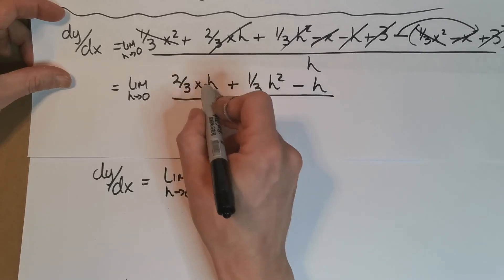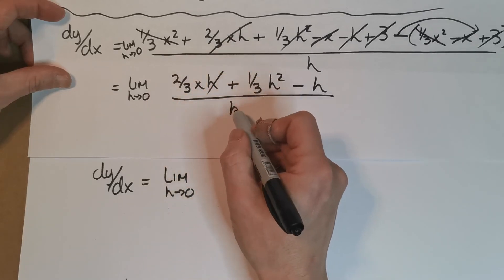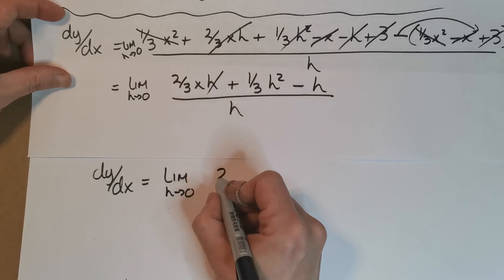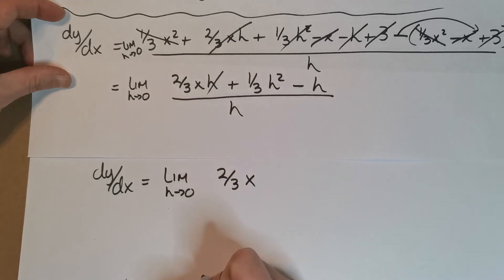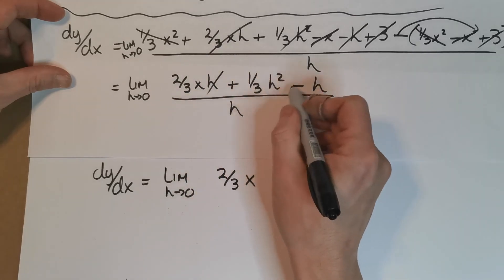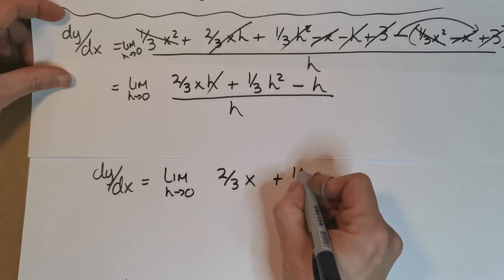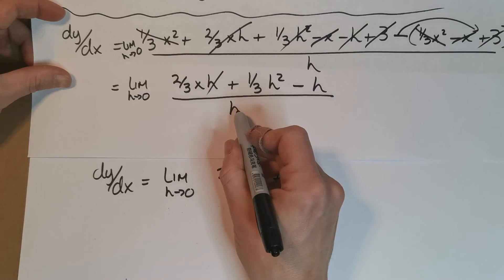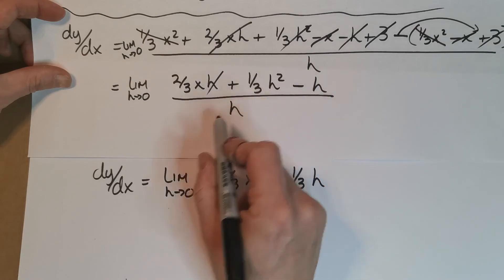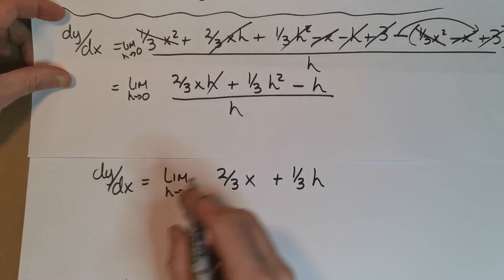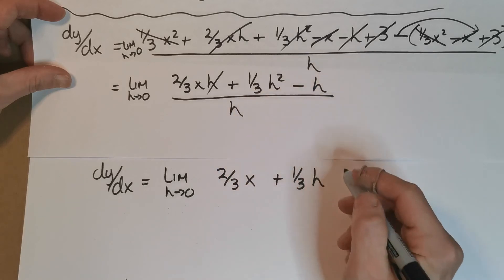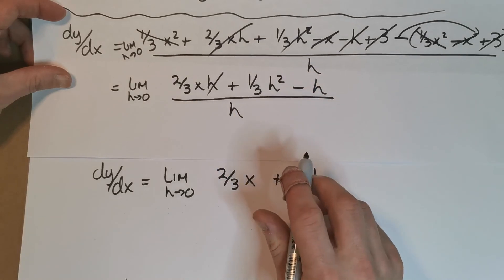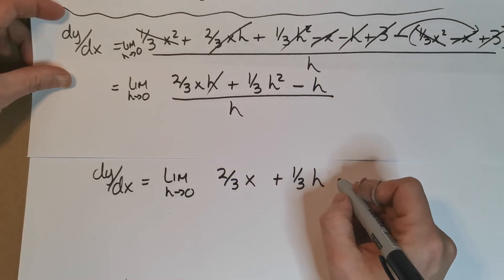So (2/3)xh divided by h, well that h will go because h divides into us, leaving us with (2/3)x. h into this will knock off one of those h's, so we'll be left with (1/3)h. And then minus h divided by h—what's that going to give us? Well, h divided into h is one, it's not zero. So they may cancel, but you're left with a one, or more specifically here a minus one.